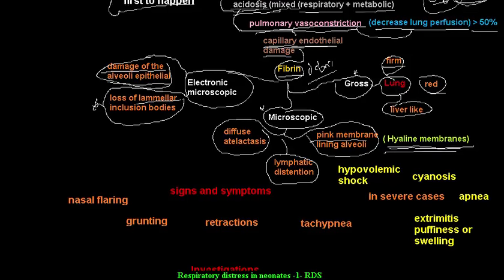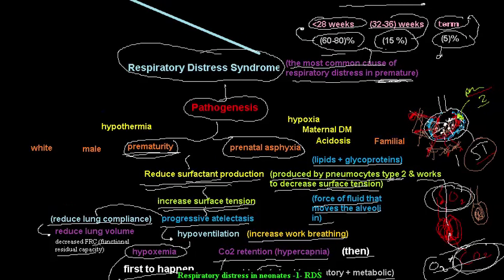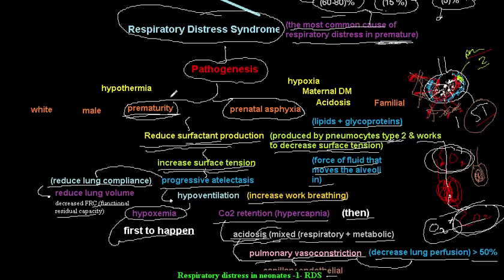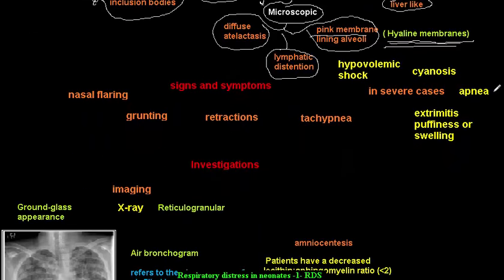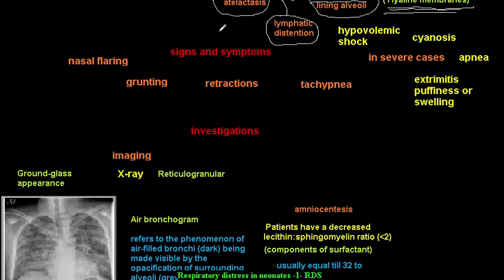Risk factors for respiratory distress syndrome include prematurity (the primary risk), prenatal asphyxia, maternal diabetes, familial decrease in surfactant, male sex — males have greater risk than females — and white race, which carries more risk than black people.